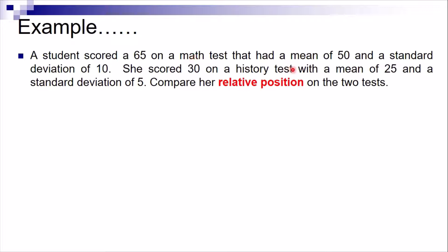Let's have this example. A student scored 65 on a math test that had a mean of 50 and a standard deviation of 10. In history, she got 30 with a mean of 25 and a standard deviation of 5. Compare her relative position on the two tests.